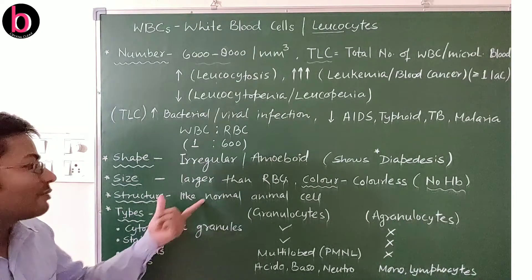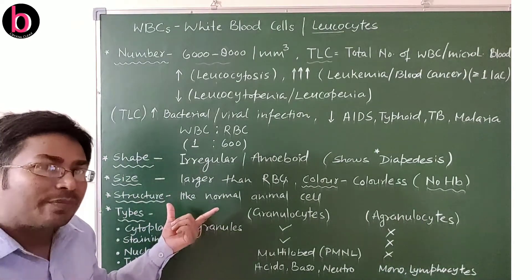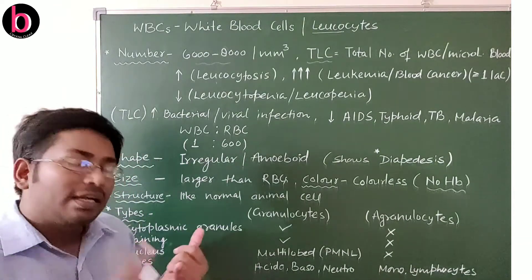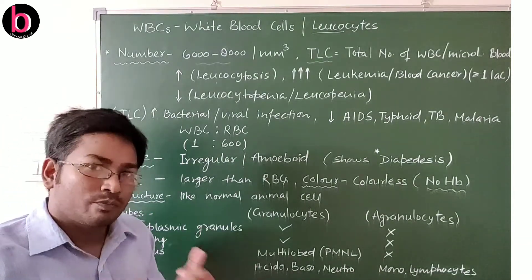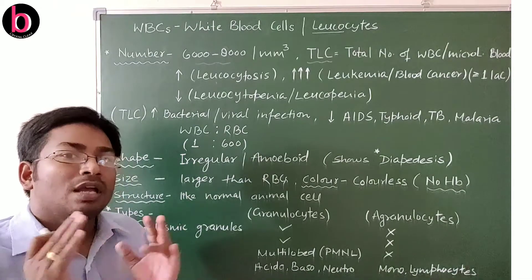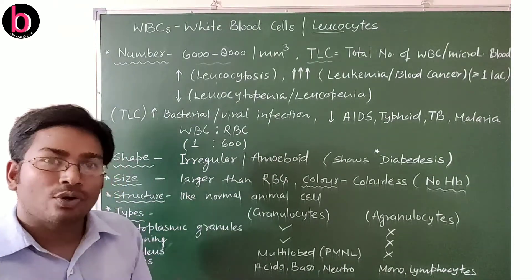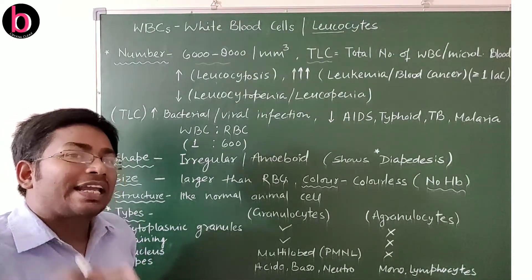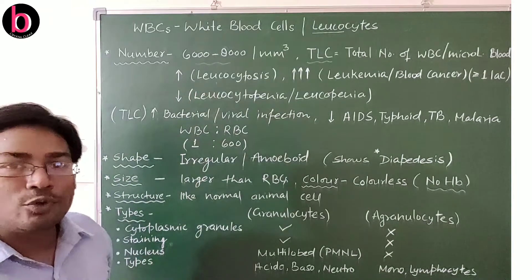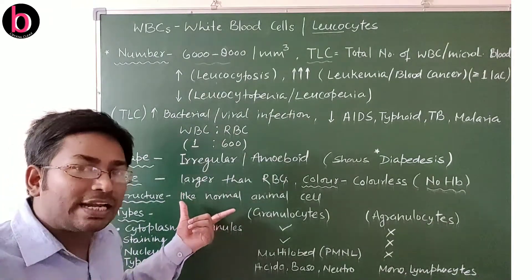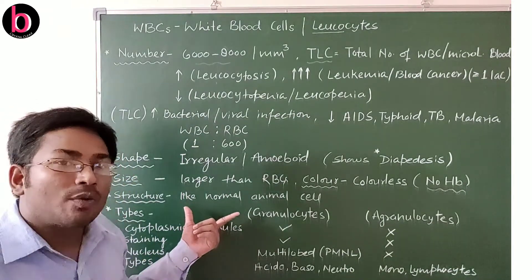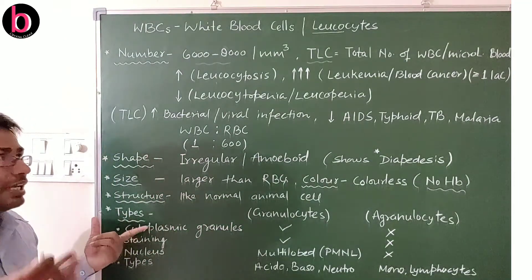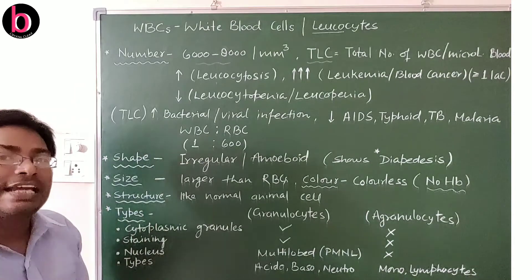WBCs are colorless because of the absence of hemoglobin. The structure of WBCs is totally different from RBCs. In RBCs, at the time of maturation, the nucleus, endoplasmic reticulum, Golgi body, mitochondria, and ribosomes all get disintegrated. While in WBCs, everything found in a normal animal cell is present.